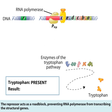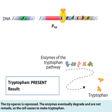The repressor acts as a roadblock, preventing RNA polymerase from transcribing the structural genes. The TRP operon is repressed.